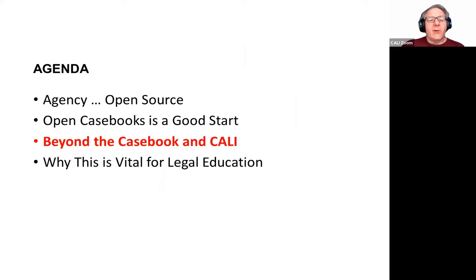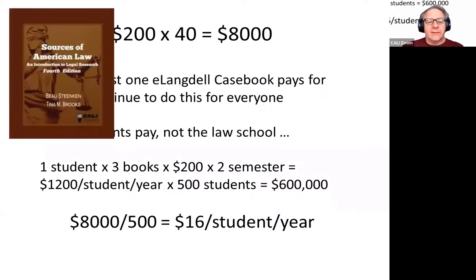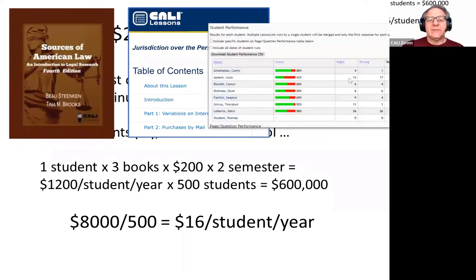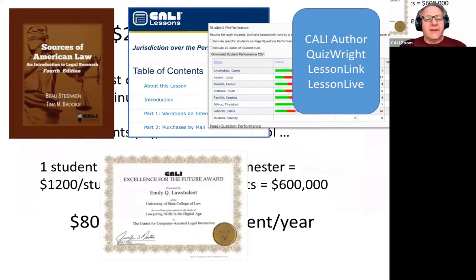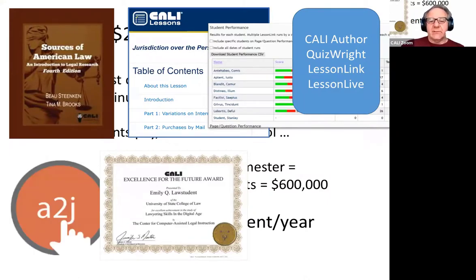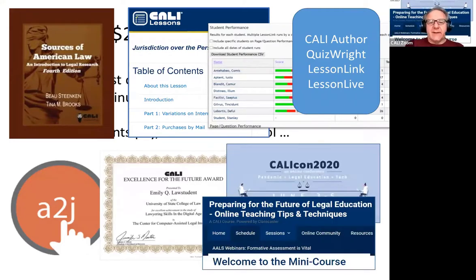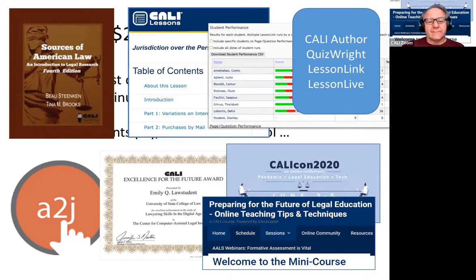And if that doesn't convince you, let me go beyond the casebook and CALI. Besides the ebooks project, we're also publishing a thousand lessons. We're publishing an ecology where you can run these lessons and get student grades or student analytics out of them, using Lesson Link or Lesson Live. You can write your own lessons or quizzes using software we've developed — CALI Author or QuizWrite. We eat our own dog food. 130 schools participate in the CALI awards program for the developers of A2J Author, which can be used for experiential learning. The savings from the books for CALI dues goes way beyond just a books-for-dues value.